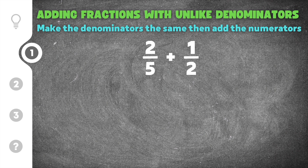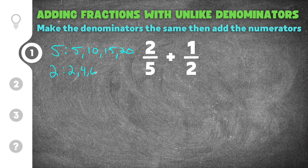Starting with 5, I'll list the multiples: 5, 10, 15, 20. Then for the denominator 2: 2, 4, 6, 8, 10. I can stop at 10 because both lists share that number, so 10 is our least common multiple. We have to change both denominators into 10.